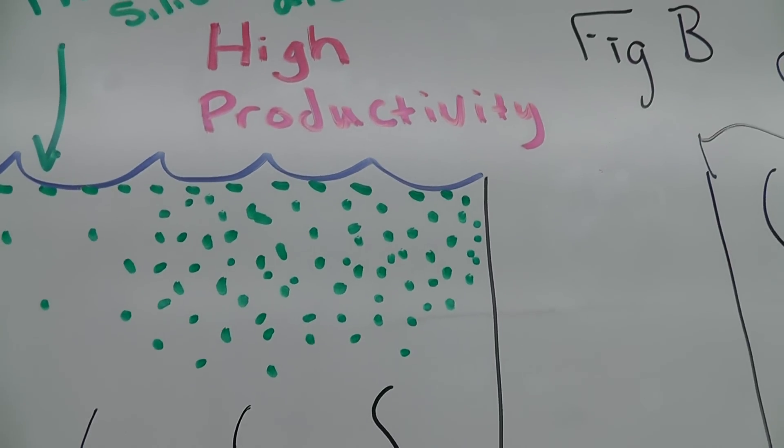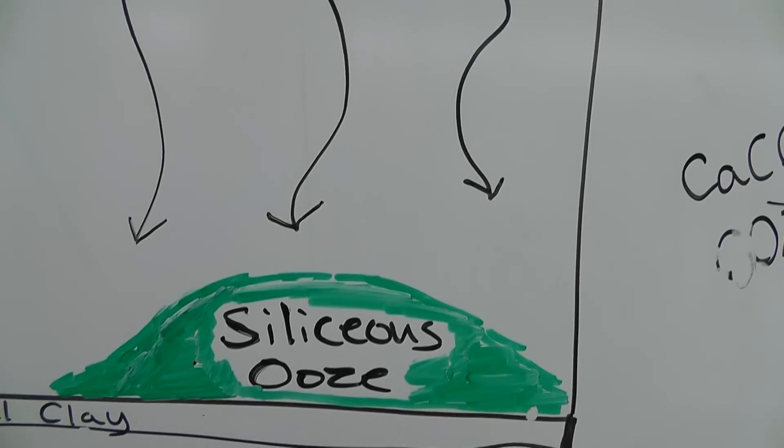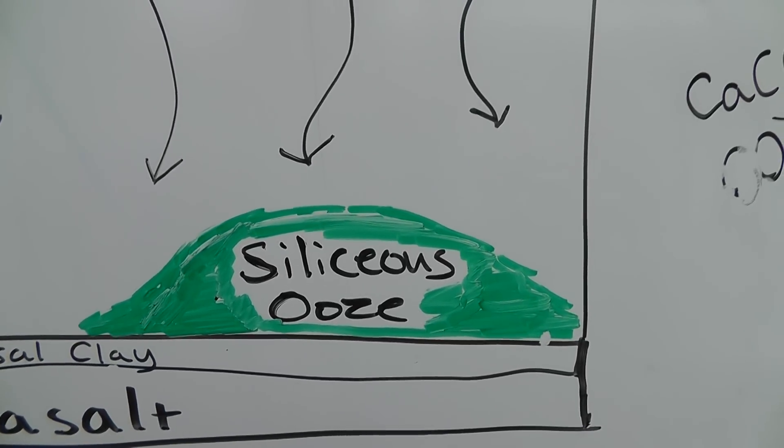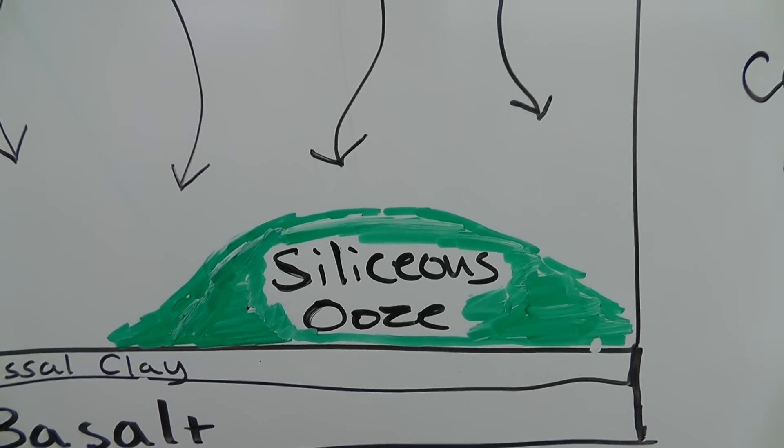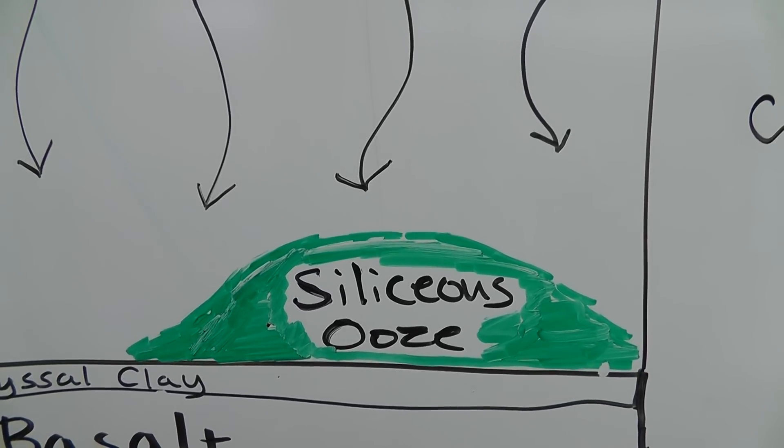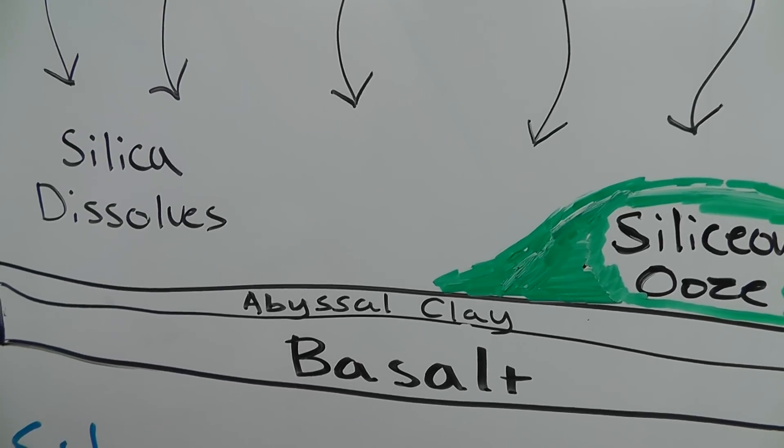However on this side if you have a ton of them falling like a really heavy snowstorm they're going to fall at a faster rate than they dissolve so you're going to get this ooze that builds up on the ground. The ooze is the silica shells mixing with other minerals, clay, and other stuff in the water.